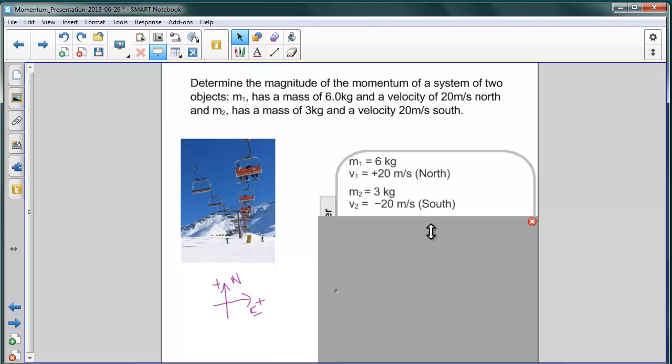The second object is 3 kilograms. It's moving to the south at 20, so we use a negative sign to indicate its direction. Remember that the momentum of the system is just the sum of the momenta of the individual objects, and the momentum is M1 times V1 in the first case, and M2 times V2 in the second case.